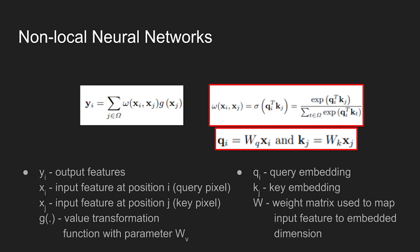Matrix w is used to map input feature to the embedded dimension. For each yi, it iterates through all other pixels xj in the feature map.